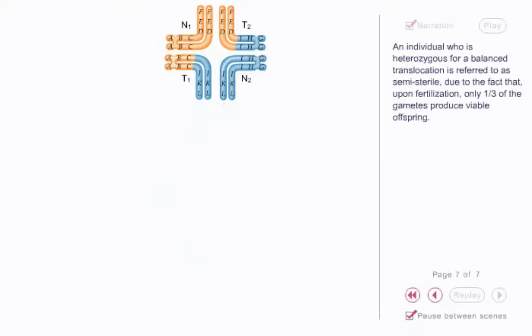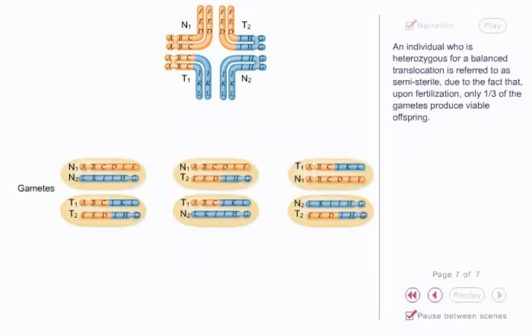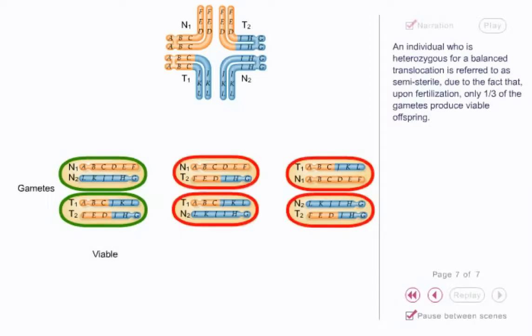An individual who is heterozygous for a balanced translocation is referred to as semi-sterile due to the fact that, upon fertilization, only one-third of the gametes produce viable offspring.